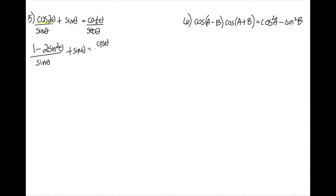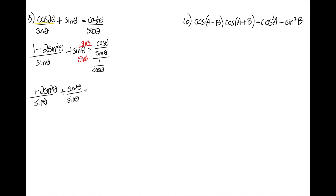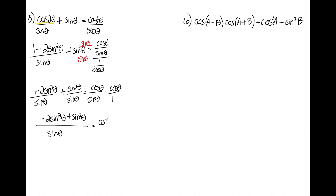On the right side, I rewrite cotangent as cosine over sine and secant as 1 over cosine. On the left, I multiply the sine theta term by sine theta over sine theta to get a common denominator, giving 1 minus 2 sine squared over sine plus sine squared over sine. On the right, the complex fraction becomes cosine theta over sine theta times cosine theta over 1. Combining the left numerator gives 1 minus 2 sine squared plus sine squared, all over sine, and the right side is cosine squared over sine.